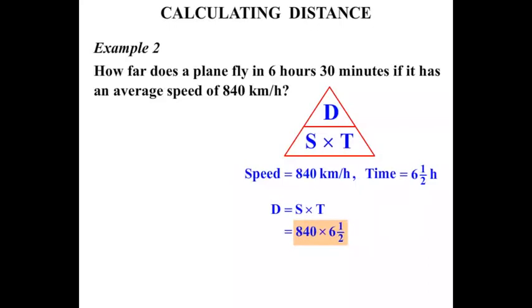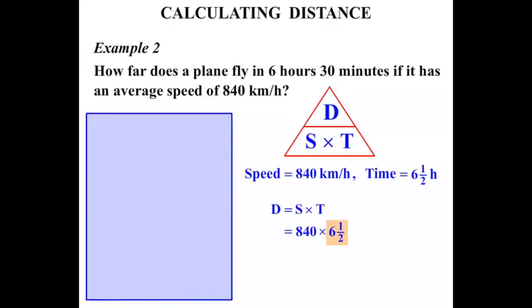Now we're multiplying by 6 and a half. Hmm, not so easy. Let's think about that. We'll break it up into a couple of steps. For 6 and a half hours, we're going to think 6 hours firstly, and then that extra half hour. All together we'll have 6 and a half hours travelled. So let's do the 6 hours firstly. The speed is 840 kilometres per hour, so we'll have 840 times 6.